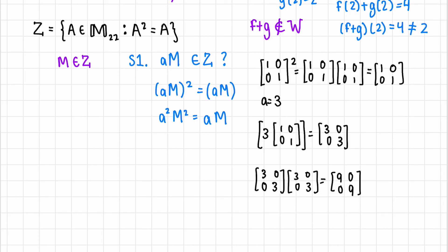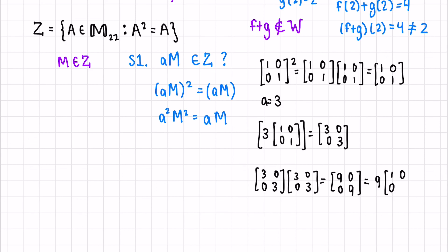Which clearly, these are not the same. This could be rewritten as 9 times [1,0; 0,1]. Because this property does not hold for A, and we have a specific example here, we can conclude that Z is not a vector space.